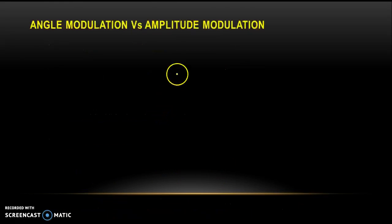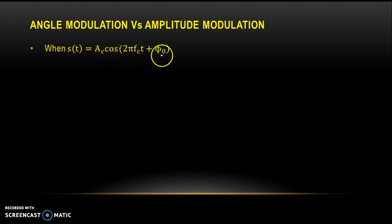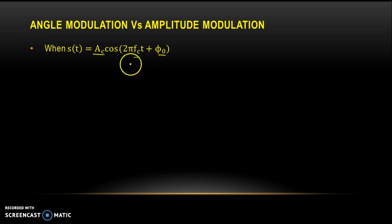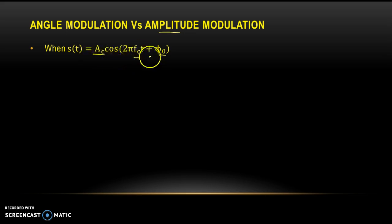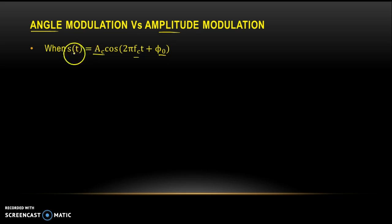Observe that in s(t) = AC cos(2πfct + φ0) we have three parameters: the amplitude, the frequency, and φ0 which is the initial phase. In amplitude modulation we modified the amplitude parameter of the carrier signal. But if we modify some other parameter — as the name suggests, in angle modulation — we are going to modify the angle of this carrier wave.